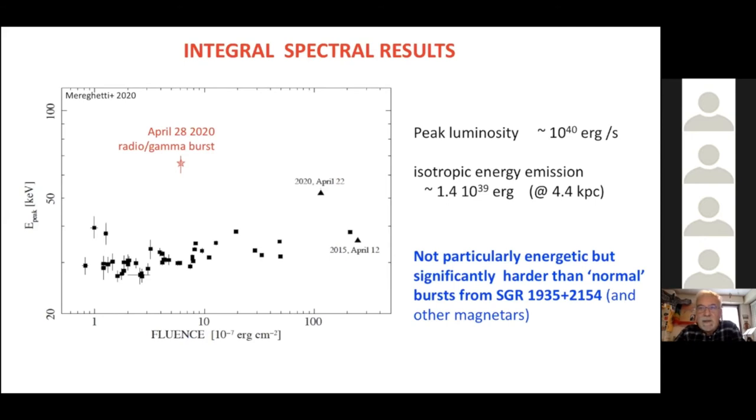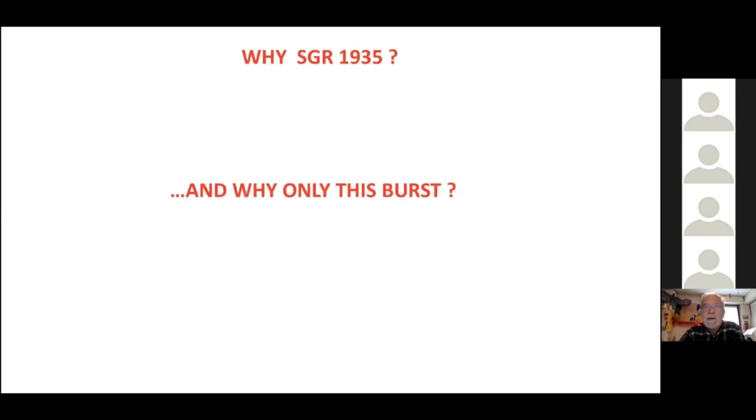Definitely this event was not a giant flare. It was a rather typical burst. So now, of course, the question that arises is why radio emission had been detected only from this magnetar and why only from this particular burst? There have been radio telescopes able to detect similar events and covering the region of skies containing magnetars operating since several years. But this is the only event of this kind that was detected up to now.